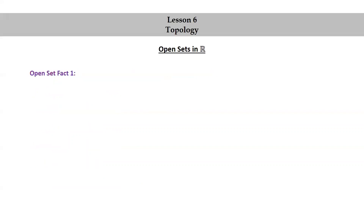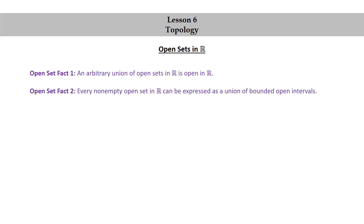Open set fact 1: An arbitrary union of open sets in R is open in R. Open set fact 2: Every non-empty open set in R can be expressed as a union of bounded open intervals. Open set fact 3: A finite intersection of open sets in R is open in R.